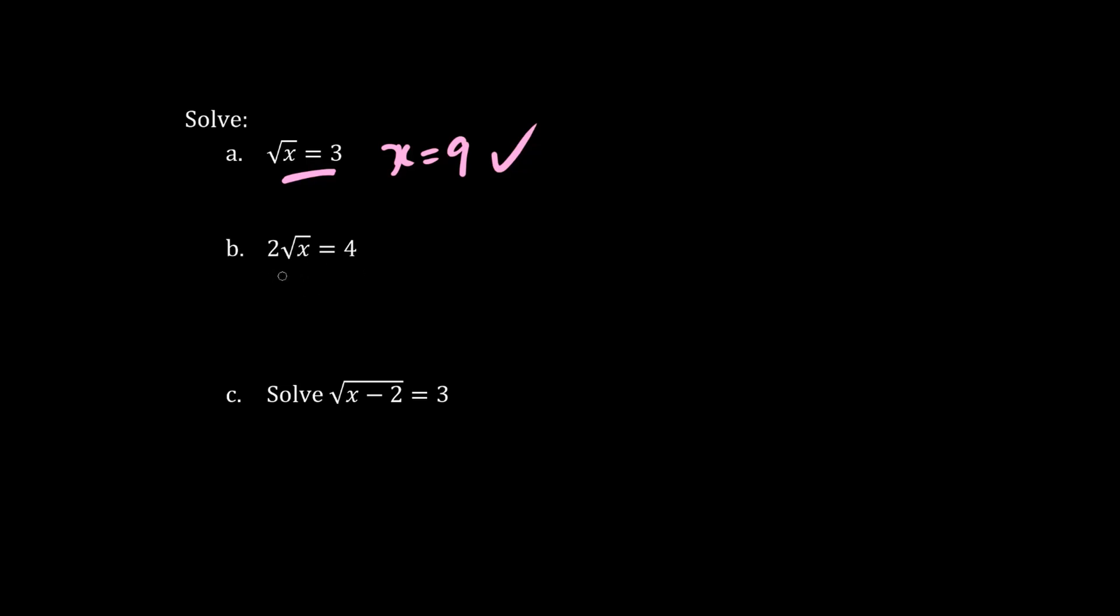As for this question here, when we square both sides, we get 4 times 4 is 16. We distribute the squaring here, so 2 squared becomes 4. And the square root of x squared just becomes x. Dividing both sides by 4, we have x equals 16 divided by 4 is 4.